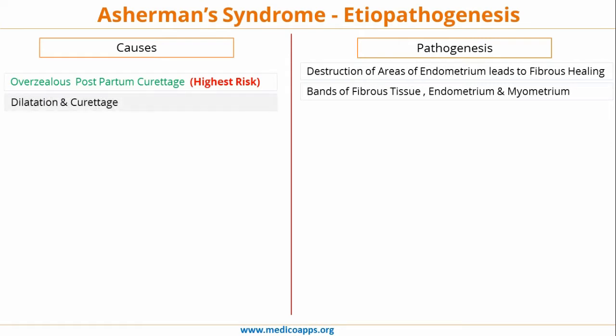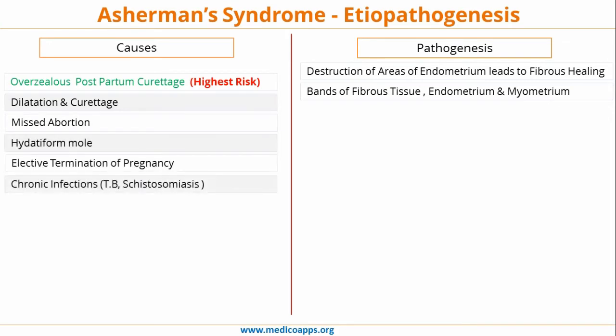Asherman's syndrome can also be seen following normal dilatation and curettage, miscarriage, hydatidiform mole, elective termination of pregnancy, and certain chronic infections like tuberculosis and schistosomiasis.